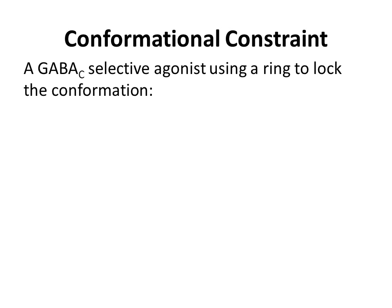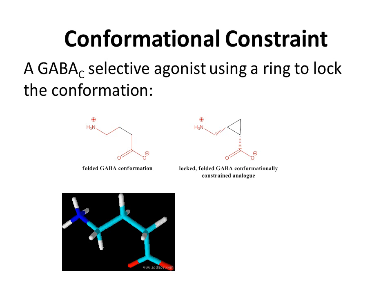Here is a GABA-C selective agonist using a ring instead of a double bond to lock the conformation. You can see that the folded GABA conformation is preferred when you lock the ring such that the amino group and the carboxylate group are cis to each other. The pictures below also show, even more clearly, how the folded conformation of GABA on the left looks very much like this conformationally constrained analog on the right.